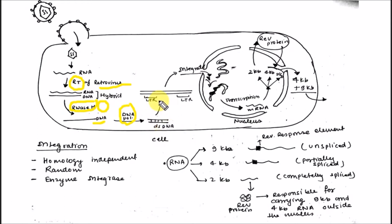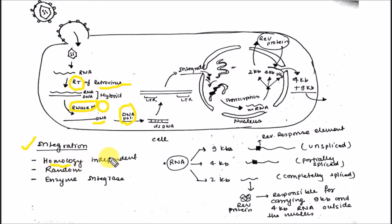This double-stranded DNA is present in the form of LTR, that is long terminal repeats, and various direct repeats. This DNA is then integrated into the host genome. This integration can be of three types: it can be homology-independent, meaning it doesn't require a homology sequence for recombination; it can be random, integrating at any place in the genome; or it can be integrated with the help of the enzyme integrase.